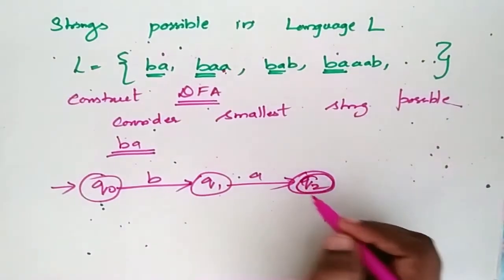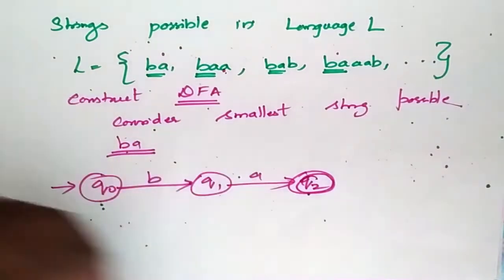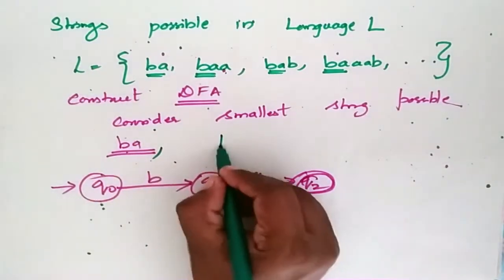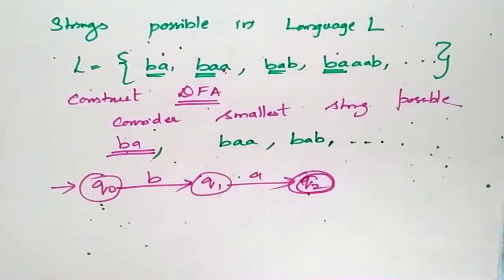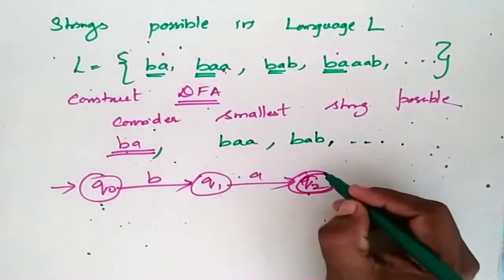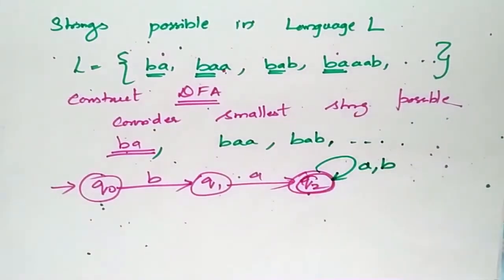This becomes the final state for this BA. Now after this BA, I can have BAA, BAB, etc., with any number of A's and any number of B's. So at this state, it can accept any number of A's and any number of B's.